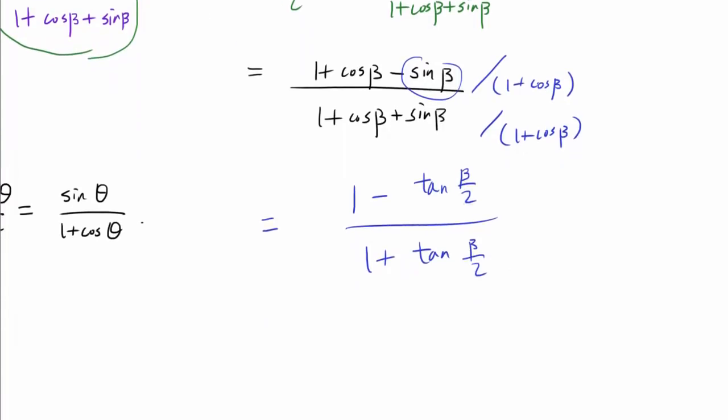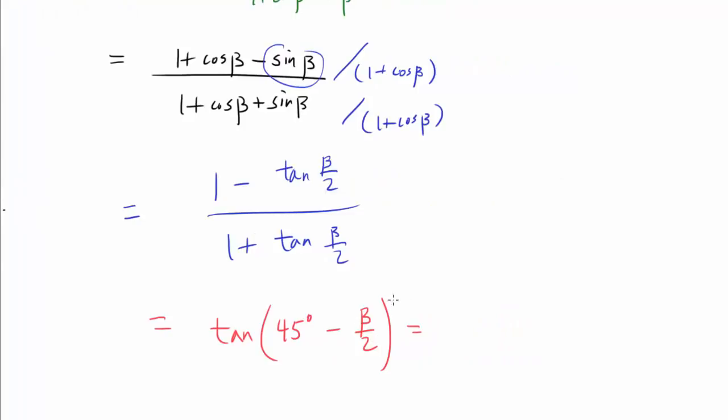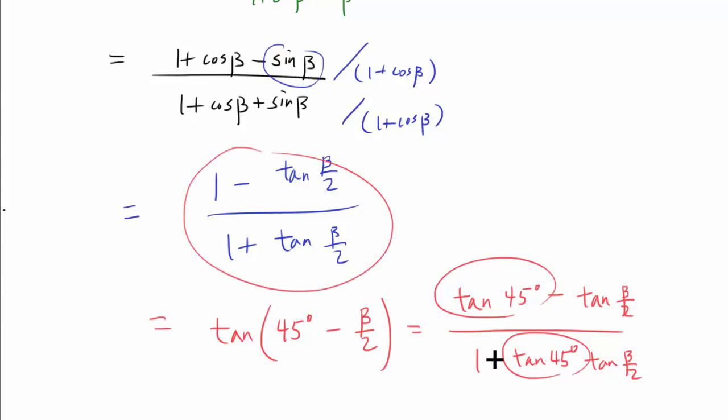And now, there is one more clever insight to be had, and that is that this entire thing is tangent of 45 degrees minus beta over 2. Why is this? Well, recall from your trigonometry class or pre-calculus class, that tangent of 45 minus beta over 2 is tangent of 1 minus tangent of beta over 2 over 1 minus tangent of 45 times tangent of beta over 2. And since tangent of 45 is 1, that's exactly what we have in this expression.